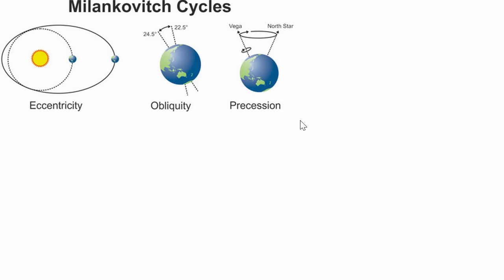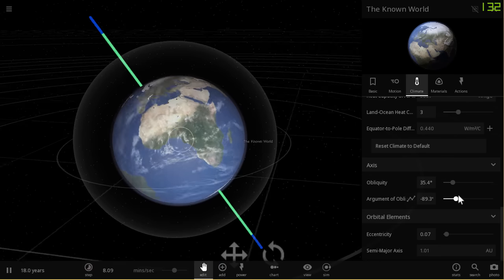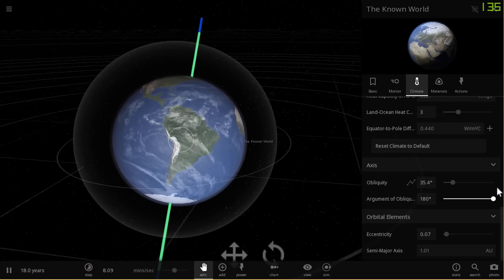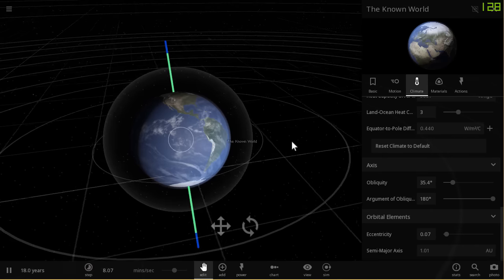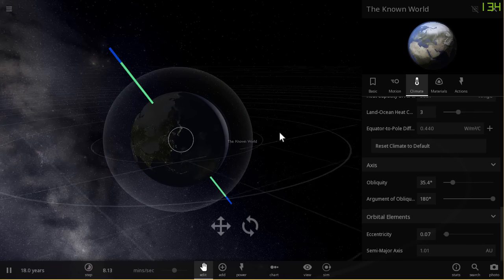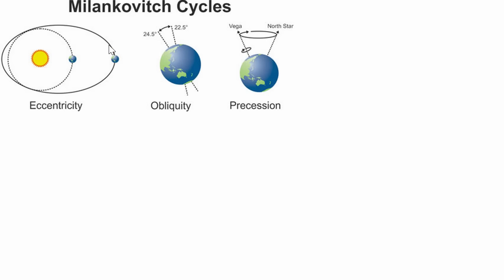The last cycle is called the precession cycle. This happens every 26,000 years and it's the cycle people say might be responsible for the ice ages. What it does is essentially rotate the axis of our planet — it's a wobble but in a different type of direction. Now, what if these Milankovitch cycles happened a lot faster on the Known World? What if they happened about a thousand times faster — so this one every 100 years, this one every 40 years, and this one every 26 years? If that were the case, you would have a really interesting and quite unpredictable climate phenomenon.